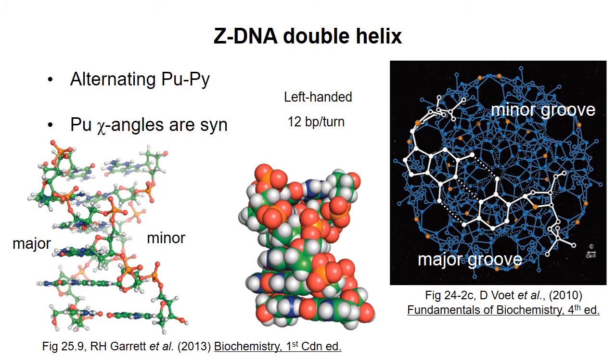And now for something completely different, Z-DNA can occur in stretches of DNA with alternating purine-pyrimidine bases along one strand. In this form, the purine bases rotate 180 degrees along the N-glycosidic bond, which is called the chi-bond, as I'll describe in another video.